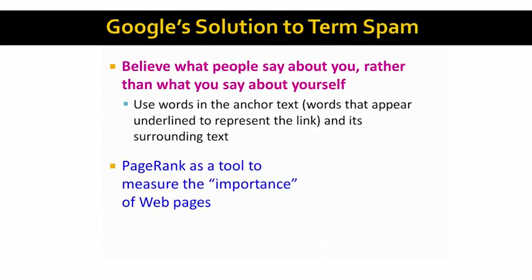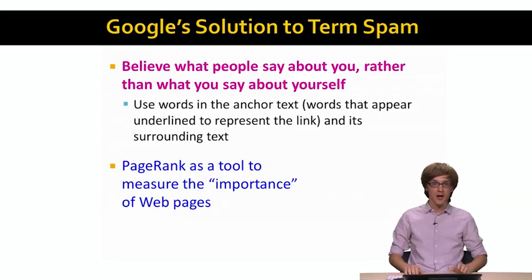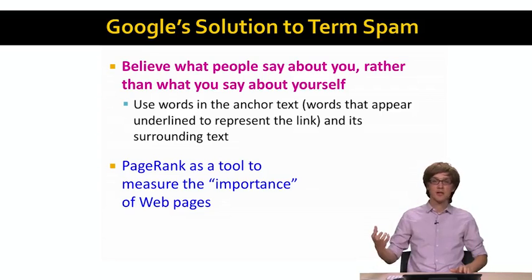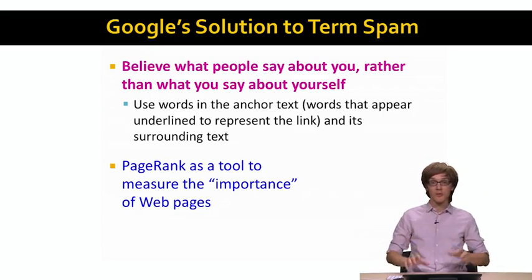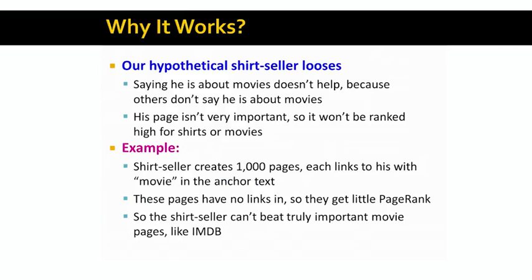Google came up with a solution to combat term spam. The basic intuition is that rather than believing what the page says about itself, we believe what other people say about the page. In our context, this means looking at the anchor text — the blue underlined hyperlink text — and what it says about the page it links to. This way we can surface web pages even for queries containing words that the page itself doesn't mention, if other web pages mention that word when linking to the target page. PageRank can be used as a tool to measure the importance of web pages through this anchor text idea.